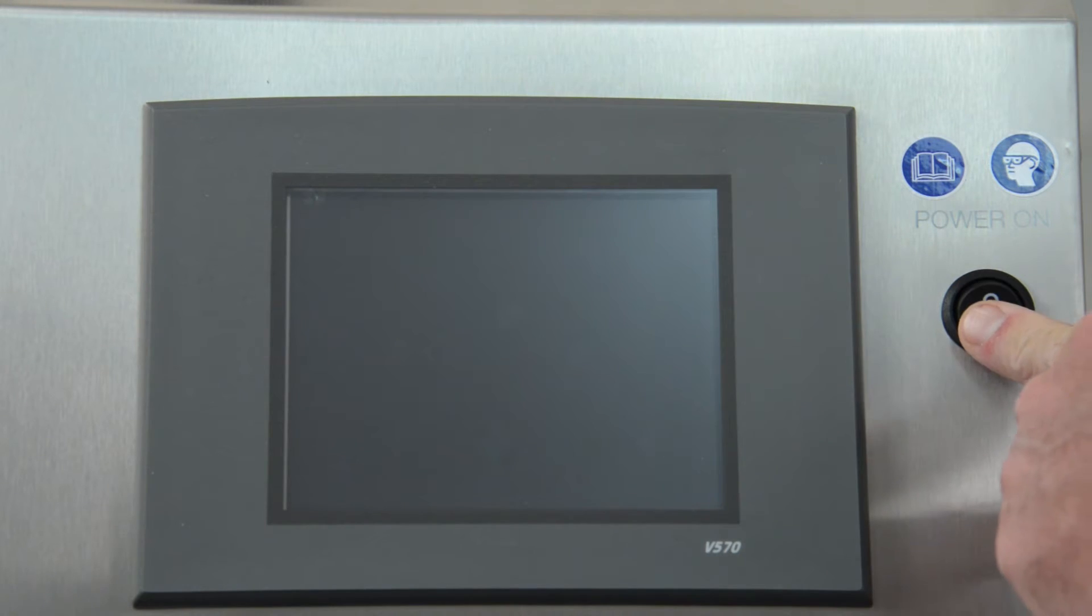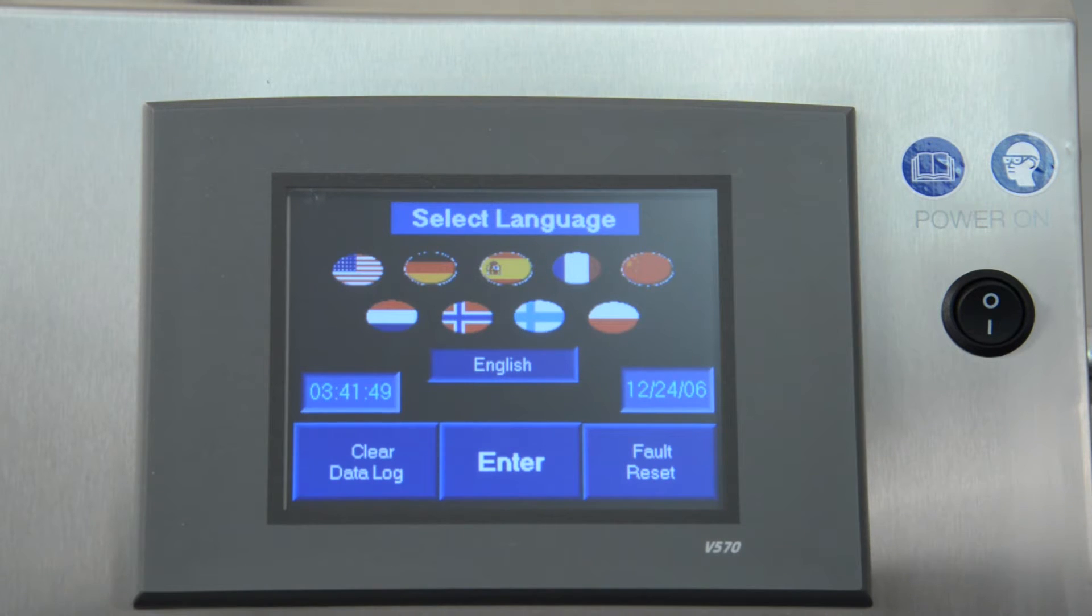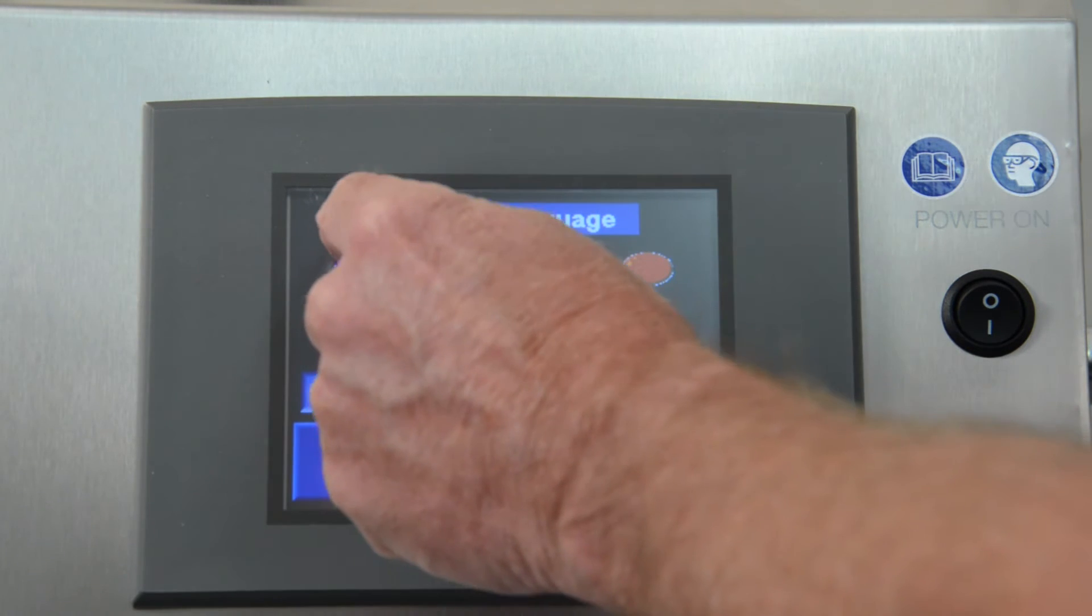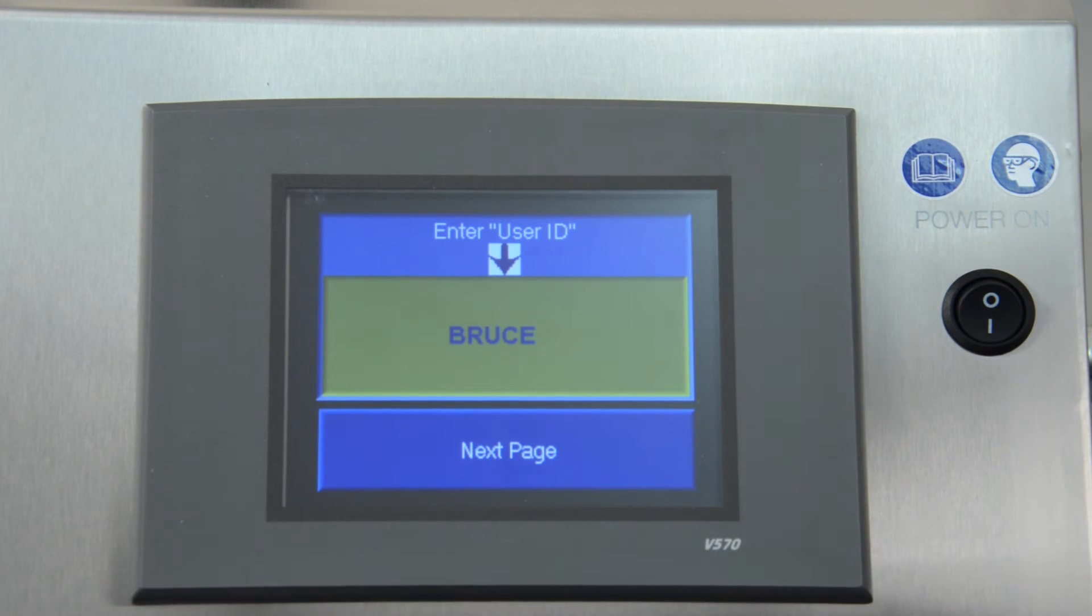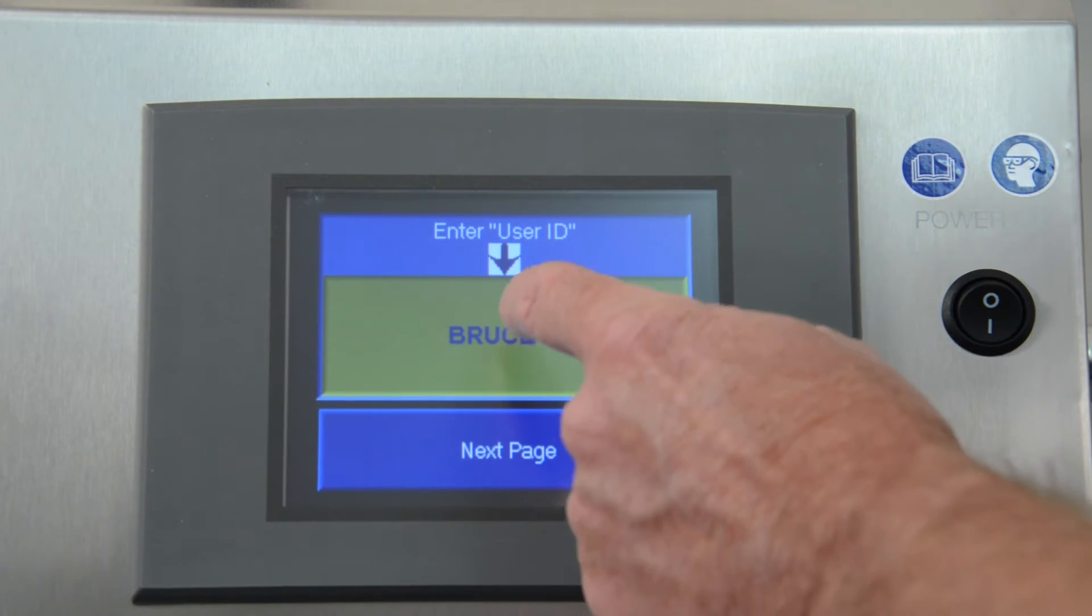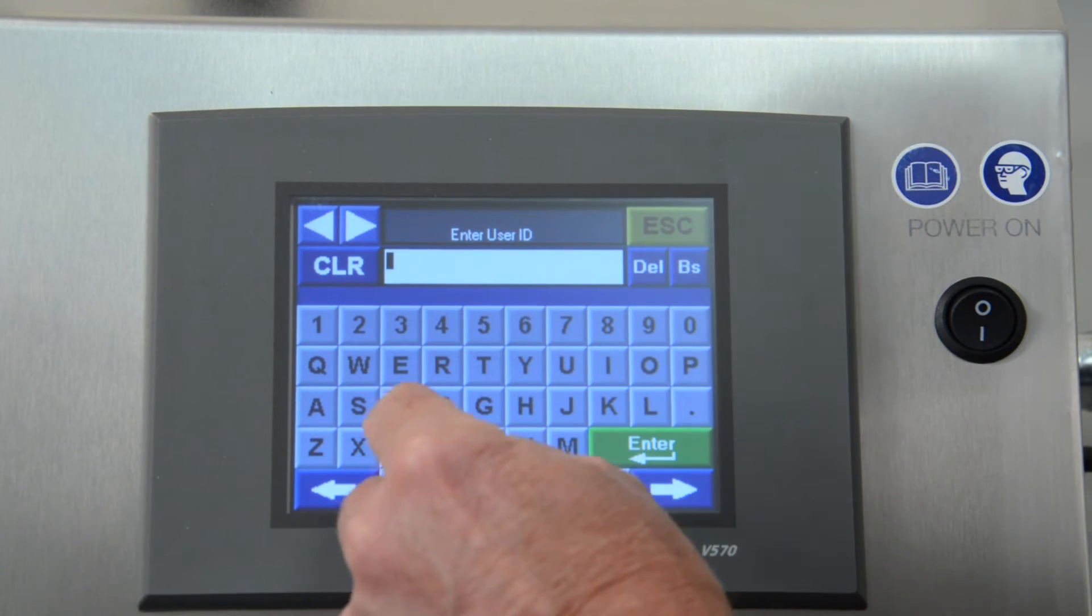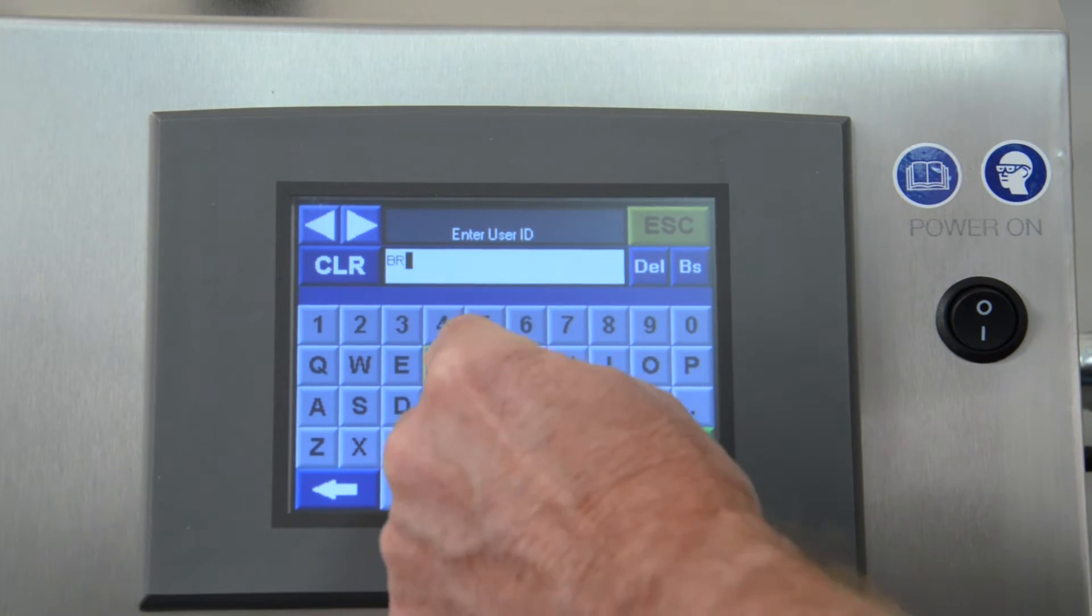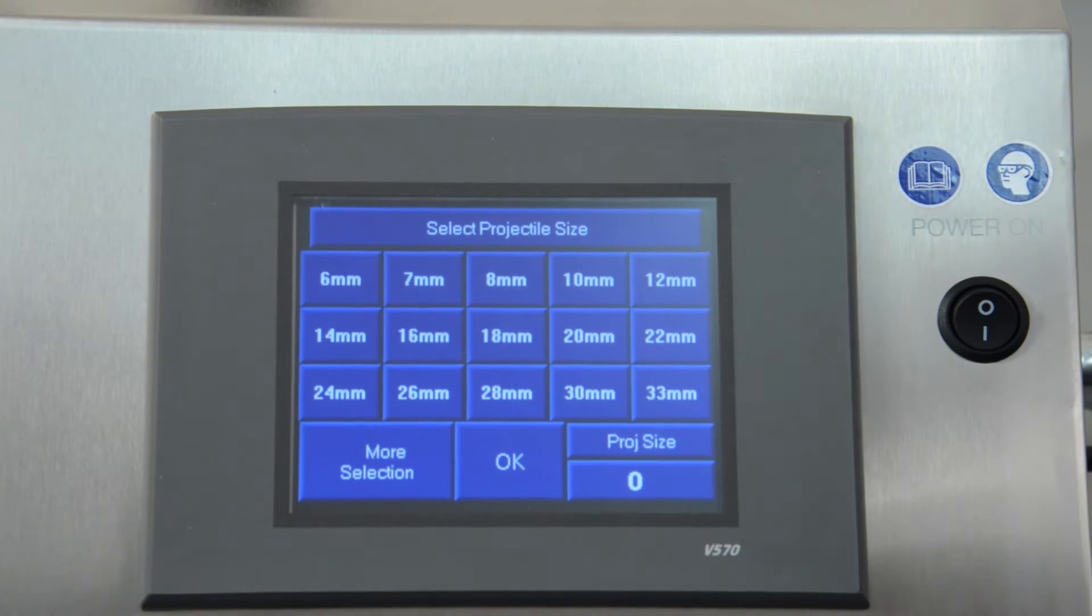Toggle the power button to power up the system. The touch screen will display the language selection screen. Simply select the flag representing the language of your choice and press enter. Touch the yellow box to enter your user ID and a keypad will appear. Press enter when finished entering your user ID. Please press next page to continue.